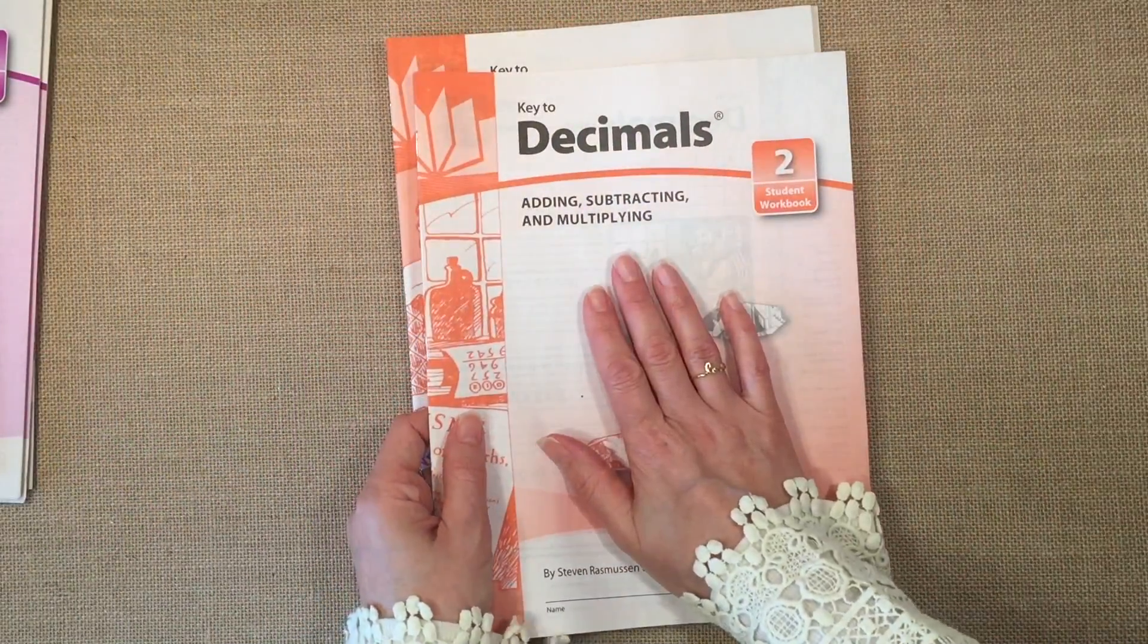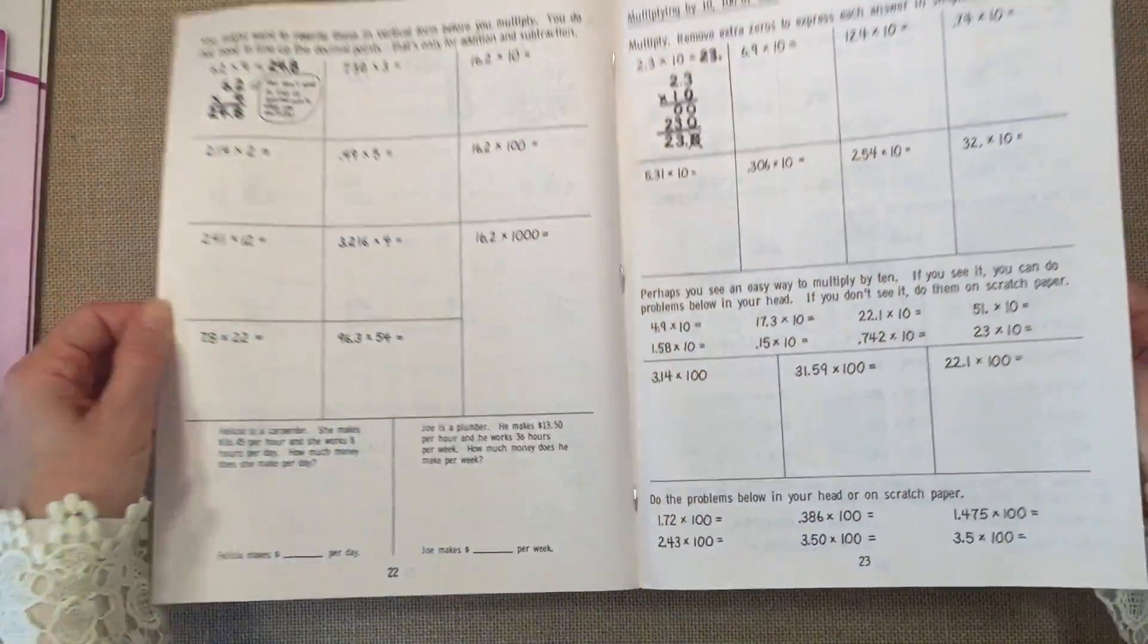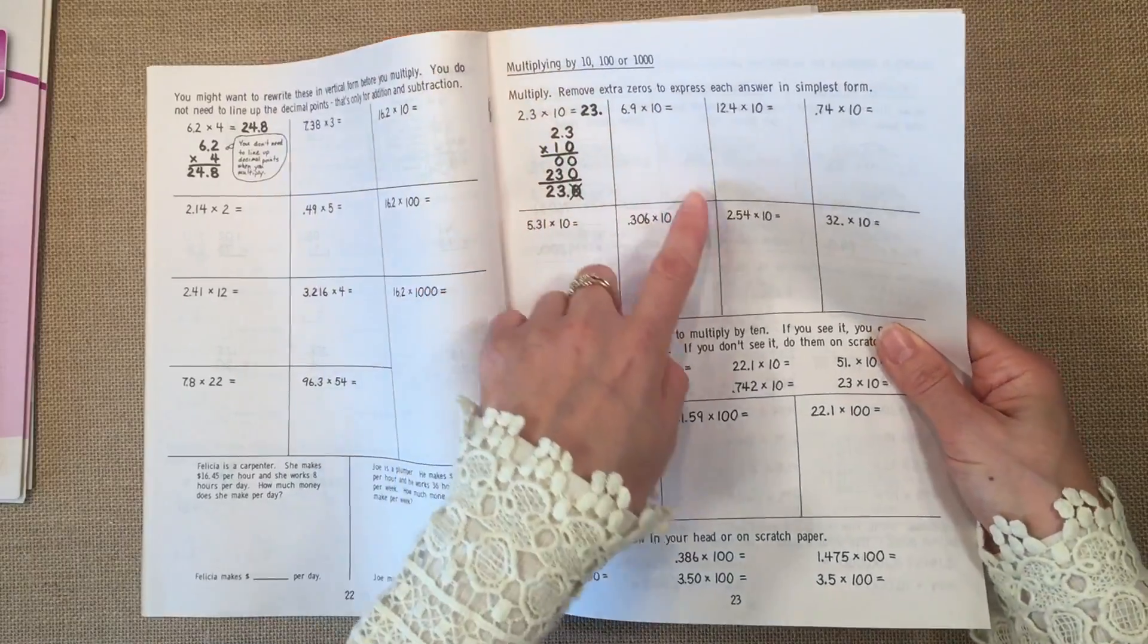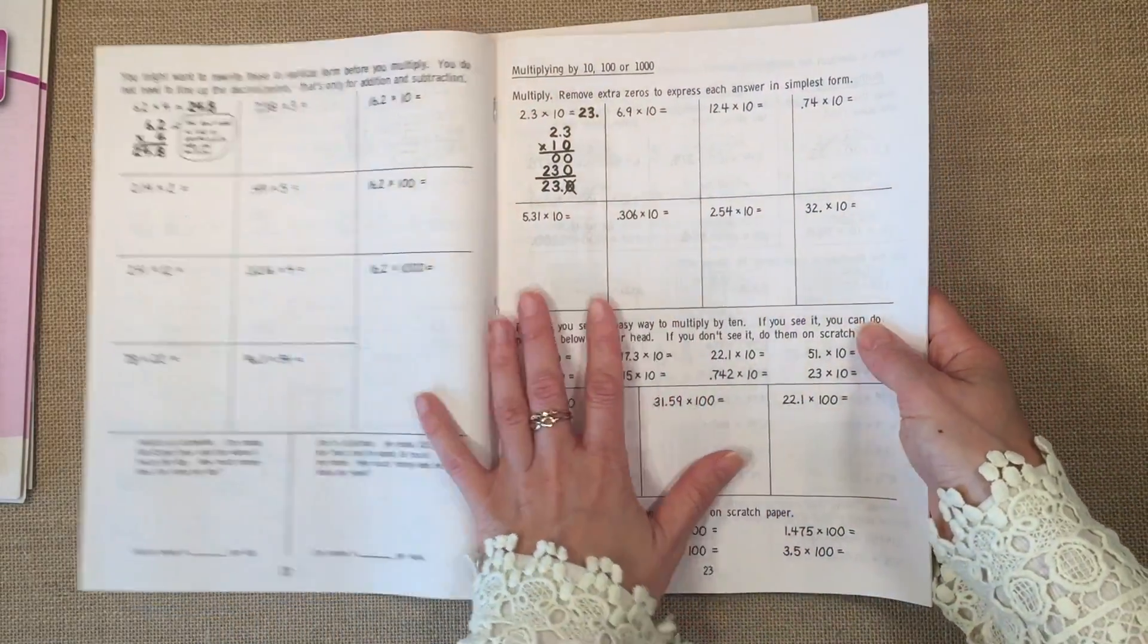And then you have adding, subtracting, and multiplying decimals. And so again, there's more space to do questions, to work out the questions, but not like a whole lot. And again, not too many questions per page.